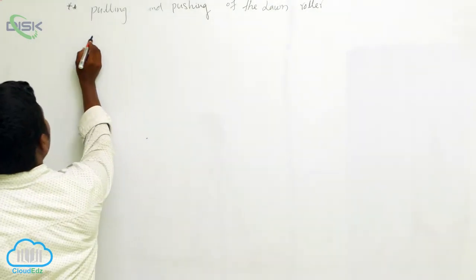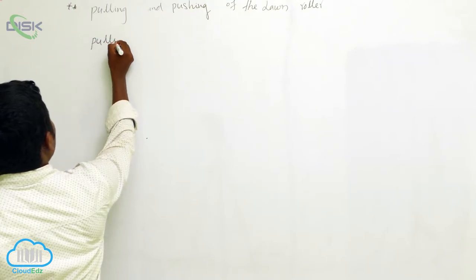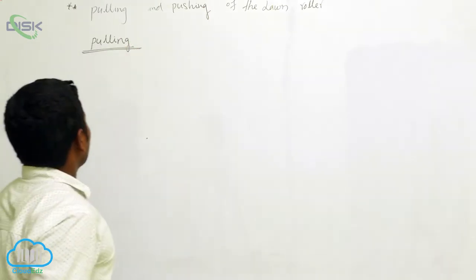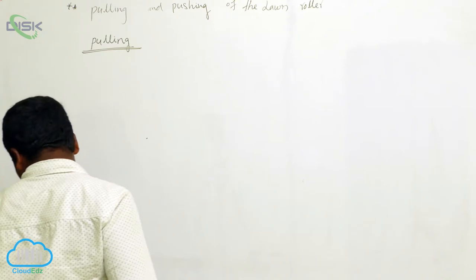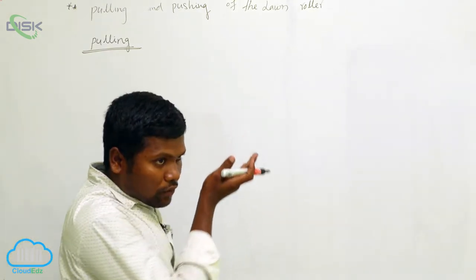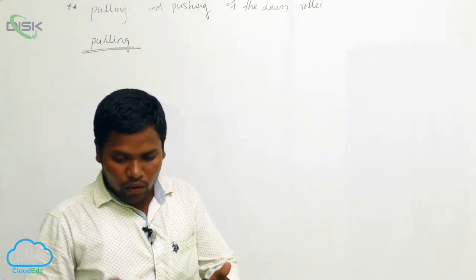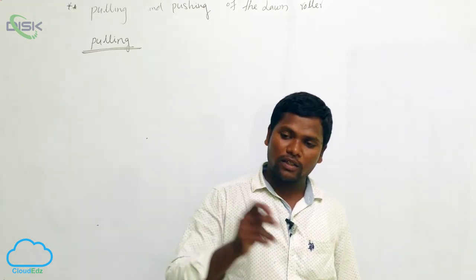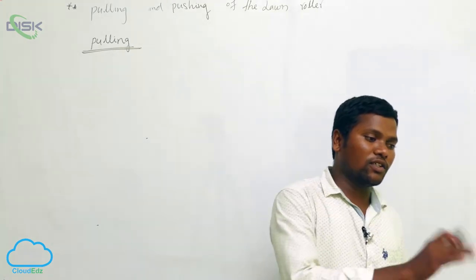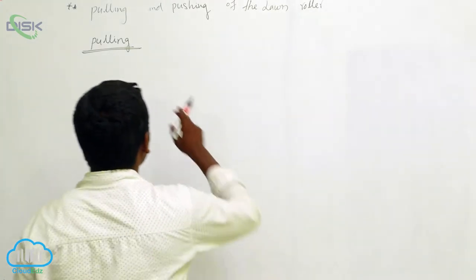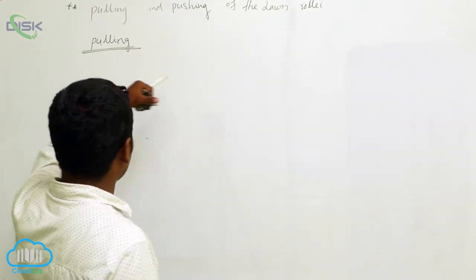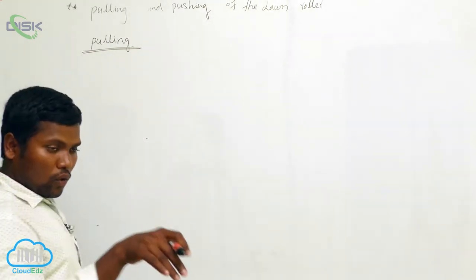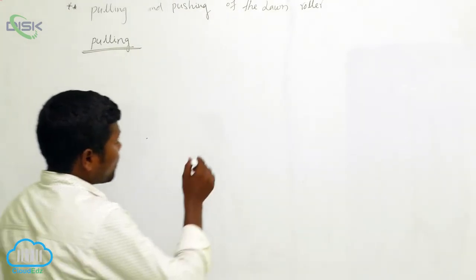So pulling and pushing of the lawn roller — we need to find which is easier: to pull or to push. We will analyze this using rolling friction. When you apply force on the lawn roller, it makes complete circular revolutions, slowly moving forward. That resistance is the rolling friction. So we are going to discuss pulling and pushing of the lawn roller in terms of rolling friction.